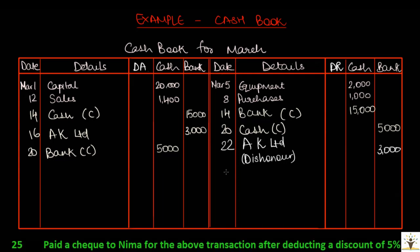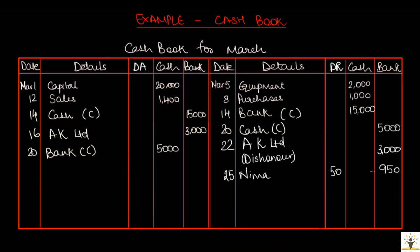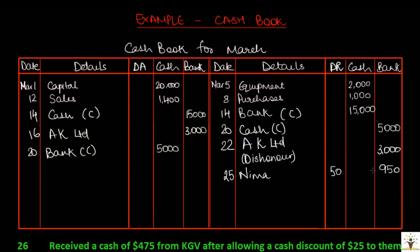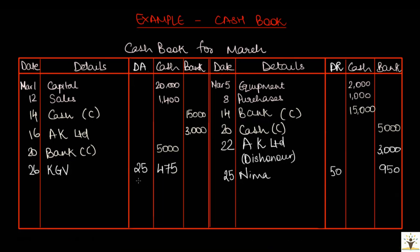Next, March 25, paid a check to NEMA for the above transaction after deducting 5% cash discount. Since this is a payment transaction, entry will be made on the credit side of the cash book. Since the amount is paid by check, it will be entered in the bank column. There is a 5% cash discount on $1,000, giving a discount received of $50, recorded in the discount received column. The difference, $950, will be paid by check in the bank column. On March 26, received cash of $475 from KGB after a discount of $25 was allowed to them. Since this is a receipt transaction, come to the debit side. A discount of $25 was allowed, so $25 in the discount allowed column, and $475 in the cash column.